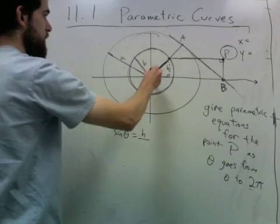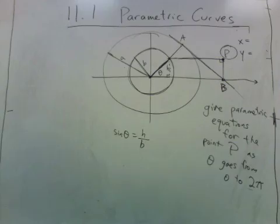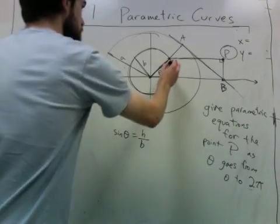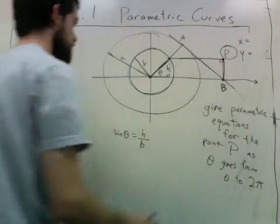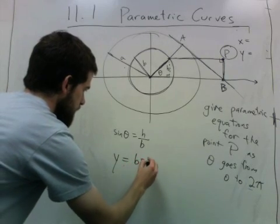So this height, which is the same thing as the height of P, is b sine theta.